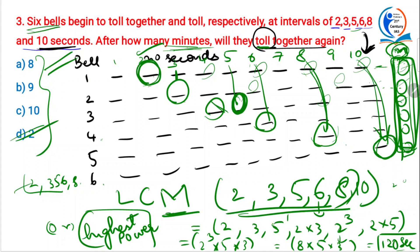Bell questions should be done like this — this should happen in your brain. Why are we taking LCM? That you should know. Not 'directly take LCM, do this, do that' — you must understand why we are taking LCM. That is the reason.